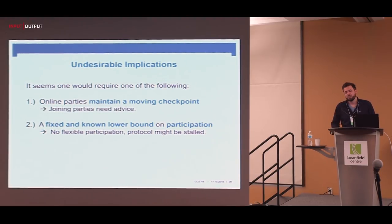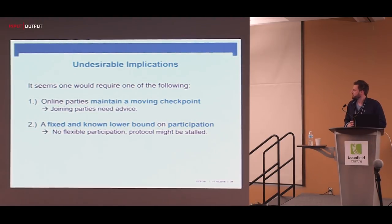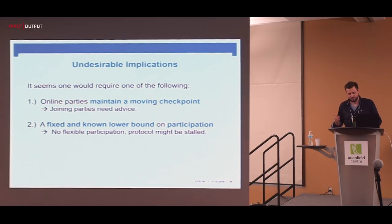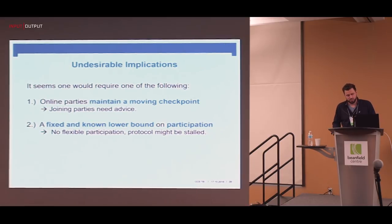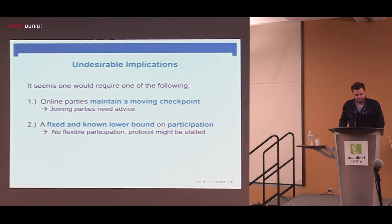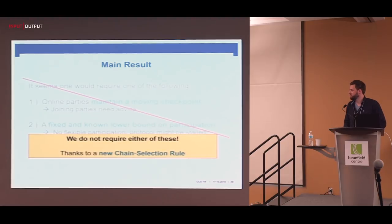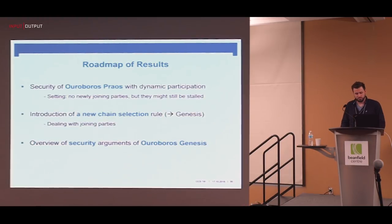For completeness, the second approach to defeat long-range attacks is to require a fixed participation level, which is also undesirable if you want to be in a dynamic participation setting. So both implications seem pretty hard to avoid because of the existence of these attacks, and at the same time unfortunate to have. This is the main result of this paper at CCS: we do not require this, and we achieve that by replacing the chain selection rule in Ouroboros Praos with a new one.